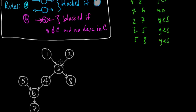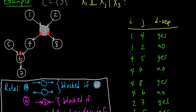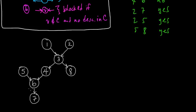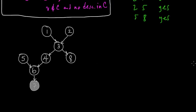Okay, we're back, and I finished drawing this graph. This is the same graph as before. And let's condition on something else — let's condition on 7. So before we had C equal to 3, and now we're going to have C equal to 7. Let's see what happens.